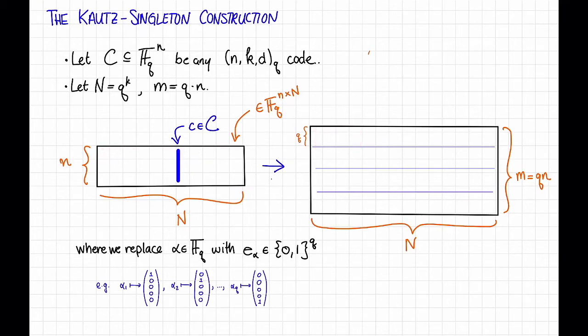How am I going to do this puffing up operation? I'm just going to do it in the most straightforward way possible. I'm going to replace an element alpha in FQ with an indicator vector in 0, 1 to the q, just saying which element that is. So for example, if I order the elements of FQ as alpha 1, alpha 2, dot dot dot, up to alpha q, there are q of them, then alpha 1 is going to go to the first basis vector 1, 0, 0, 0, 0. Alpha 2 is going to go to the second basis vector 0, 1, 0, 0, 0, and so on, all the way up to alpha q, which is going to go to the last basis vector 0, 0, 0, 0, and so on, 1.